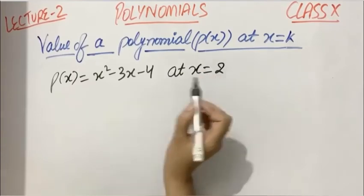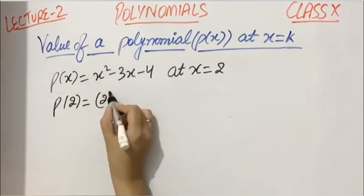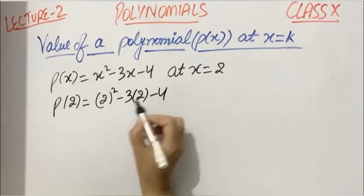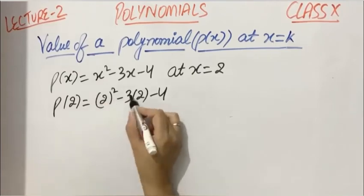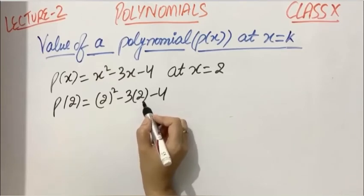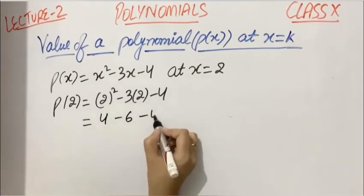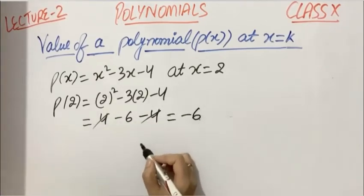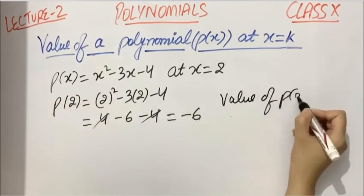It's very simple. Just replace this x by 2. P(2) = 2² - 3(2) - 4. When putting values, you should always use brackets so that there are fewer chances of mistakes. This equals 4 - 6 - 4, and the value is -6.